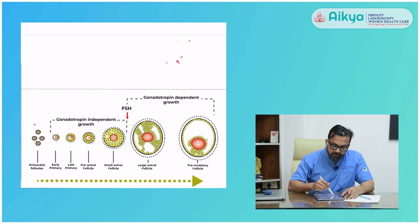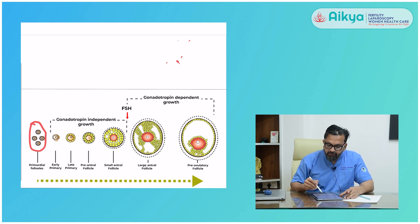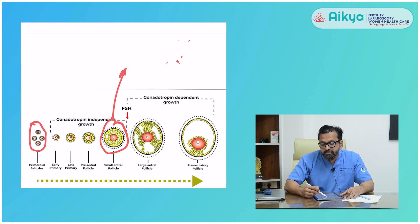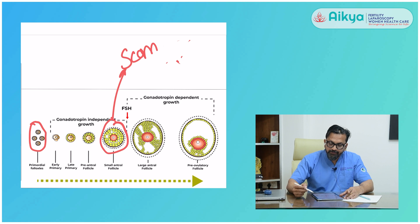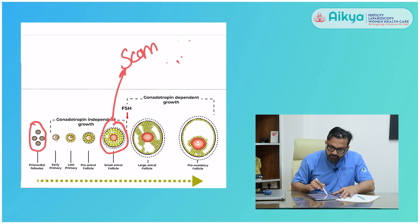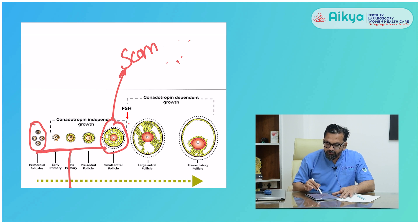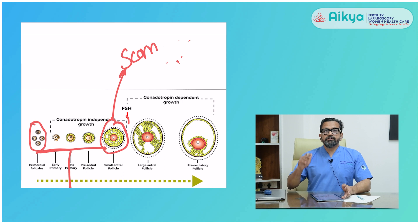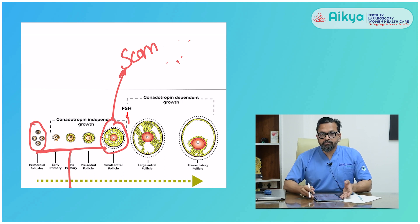Egg development has different stages. It takes around 60 to 80 days for one egg to develop. It initially starts off as what is called primordial follicles, which are not seen on the scan, and slowly develops to what is called a small antral follicle. These are the follicles seen on the transvaginal scan, and slowly the small antral follicles become the preovulatory or mature follicles. These are the eggs which need to come up to the small antral follicle stage for us to use in the IVF procedure or to create embryos.